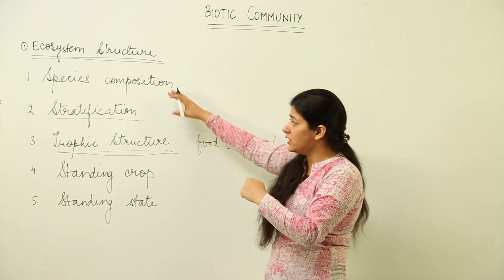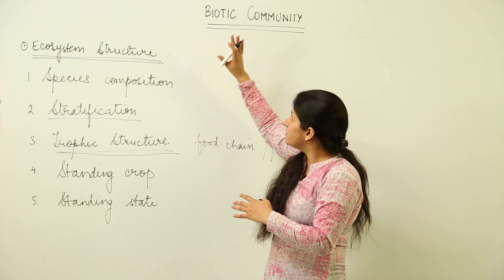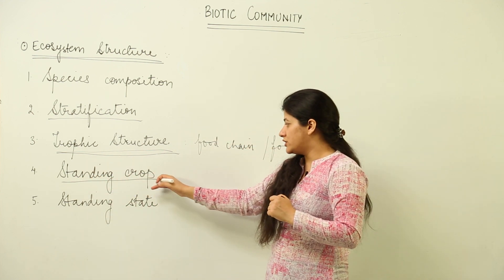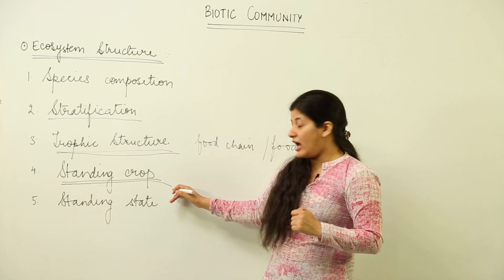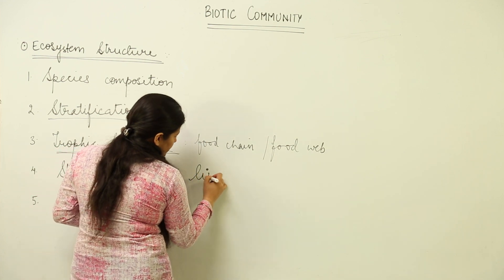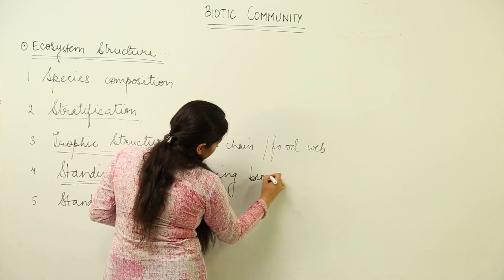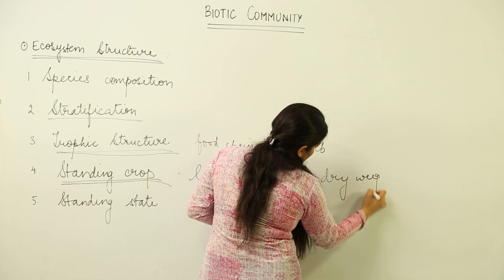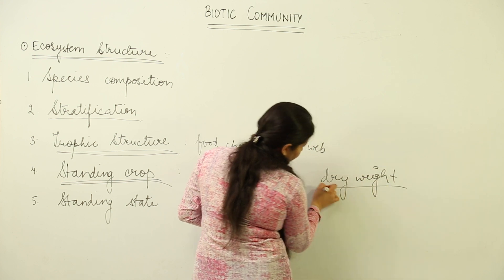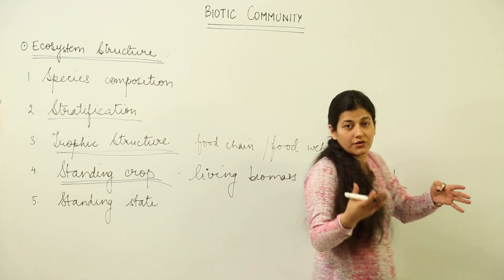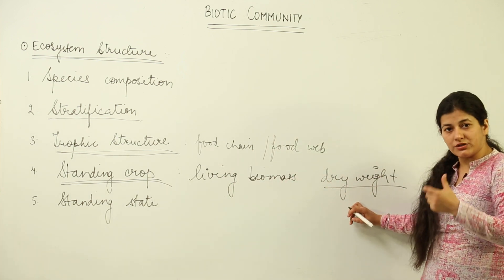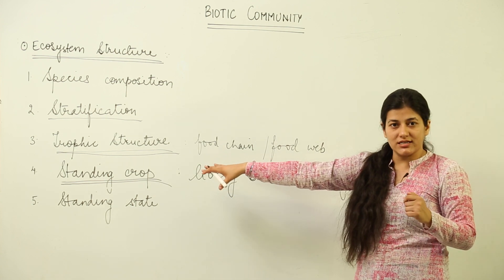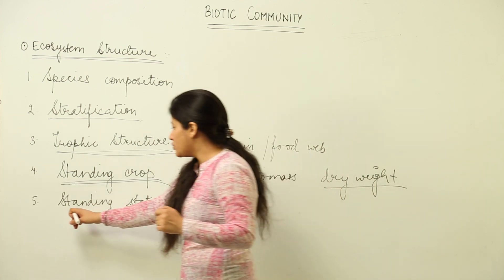Within the trophic structure, we encounter terms like producers, consumers, decomposers, primary consumers, and secondary consumers — topics we will deal with in detail under Biotic Community. Another structural specification is standing crop, which refers to the living biomass present in a given ecosystem. We prefer dry weight over fresh weight for accuracy, as it gives a more precise analysis.